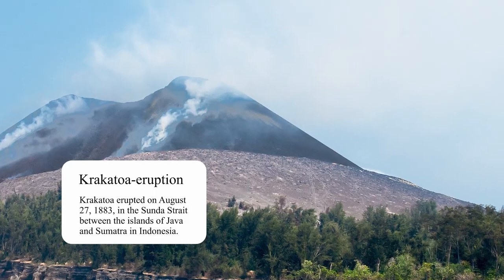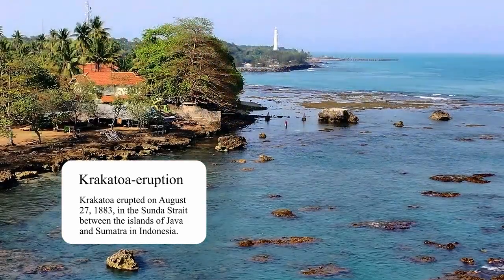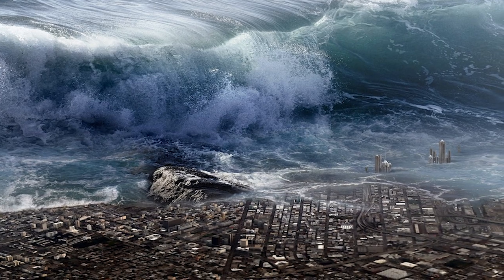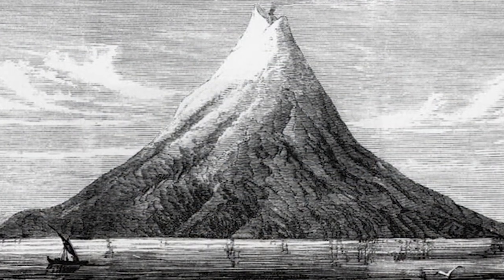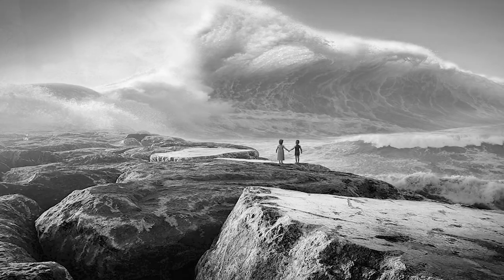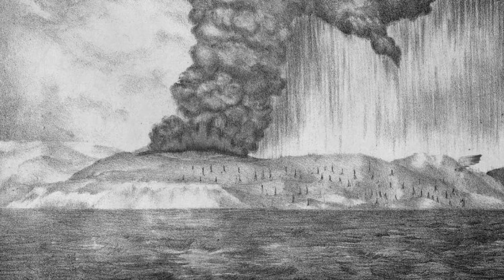Krakatoa erupted on August 27, 1883, in the Sunda Strait between the islands of Java and Sumatra in Indonesia. The eruption was so powerful it caused tsunamis that killed over 36,000 people and caused widespread damage throughout the region. A massive explosion was heard over 3,000 miles away, sending a huge cloud of ash and gas into the atmosphere that blocked the sun and caused darkness to fall. The eruption caused a global temperature drop of 2 degrees Fahrenheit, and the 100-foot-tall tsunamis traveled at a staggering 500 miles per hour.